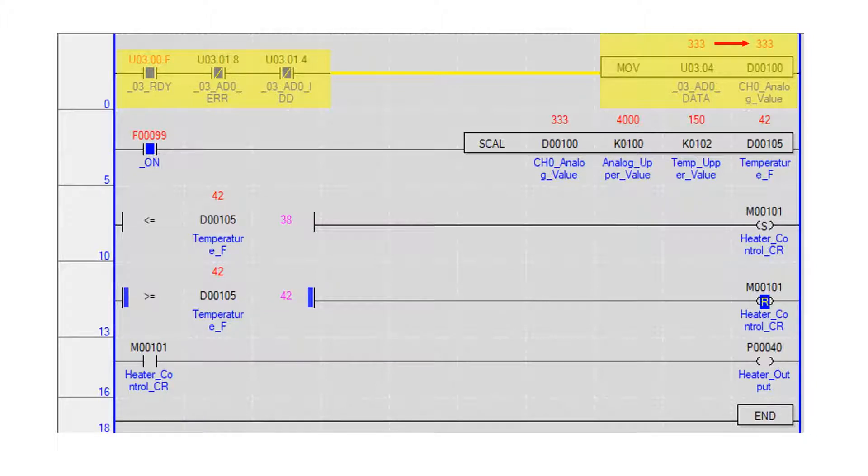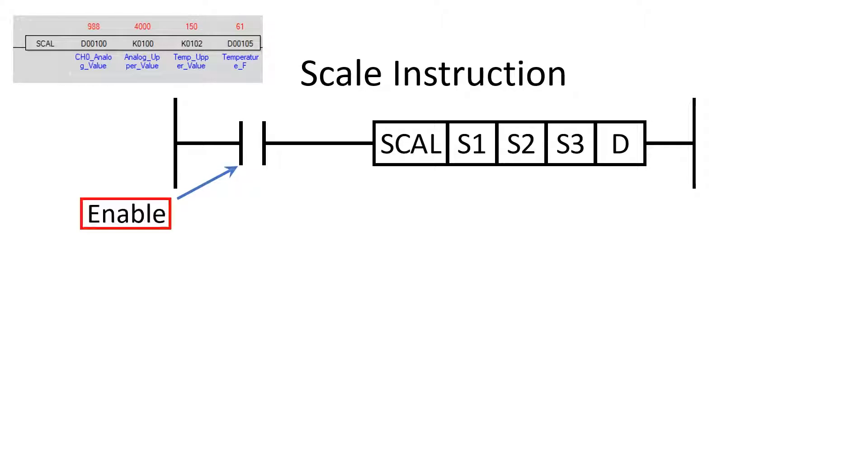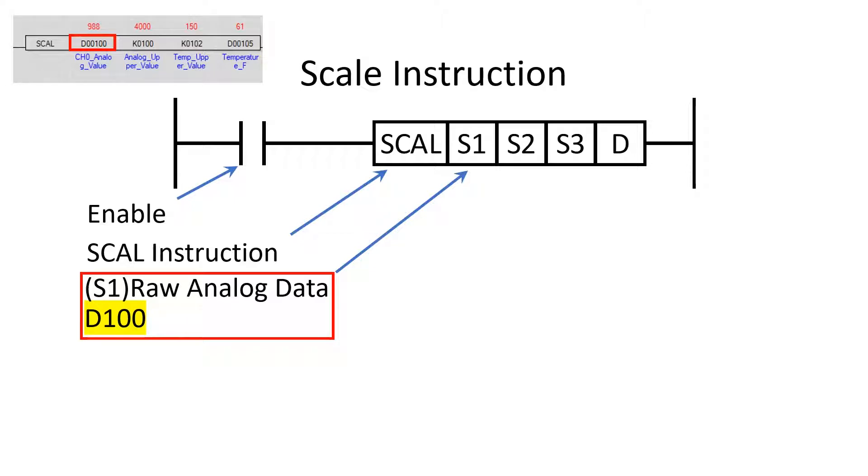In this example, the always on bit in the PLC enables the scale instruction. An enable condition is required when using the scale instruction. This program uses the SCAL instruction. Operand S1 stores the raw analog data. In this program, it is D100.